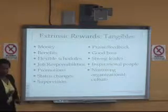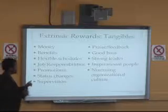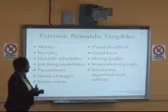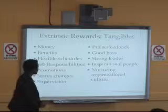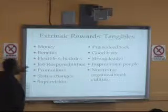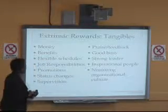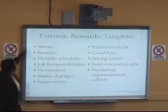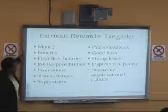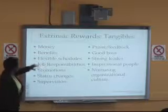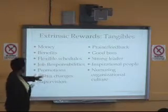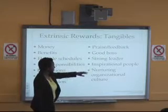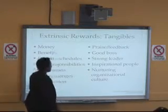Going back to what we discussed at the start: one student said something could motivate them, another said someone, and Ruth said it was internal — she motivated herself. First, extrinsic rewards are tangible things. Examples include money, benefits, flexible schedules, job responsibilities, promotions, status changes, supervision, praise and feedback, having a good boss or strong leader, having inspirational people, and a nurturing organizational culture.